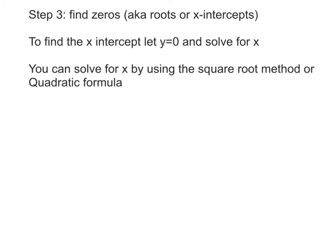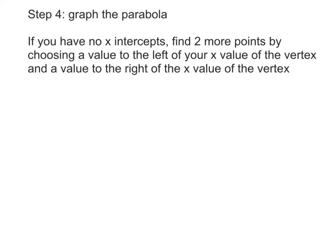Step 3: find the zeros, also known as roots or x-intercepts. To find the x-intercept, let y equal 0 and solve for x. You can solve for x by using the square root method or the quadratic formula. Step 4: graph the parabola. If you have no x-intercepts, find two more points by choosing a value to the left and a value to the right of the x value of the vertex.